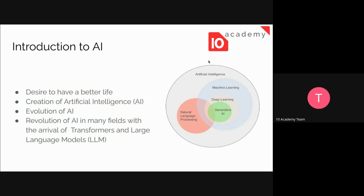We also have natural language processing, because we want the machine to be able to understand human language. The field of natural language processing is a subset of artificial intelligence focusing on understanding, interpreting, and generating human languages in a way that is meaningful and contextually relevant. Everything related to text data in deep learning will come under the umbrella of natural language processing.